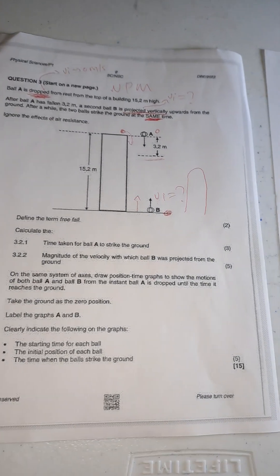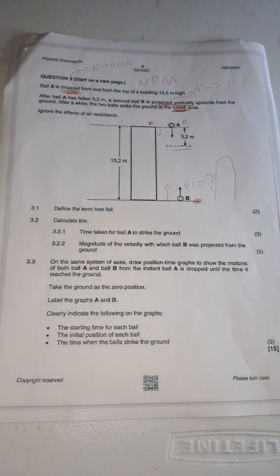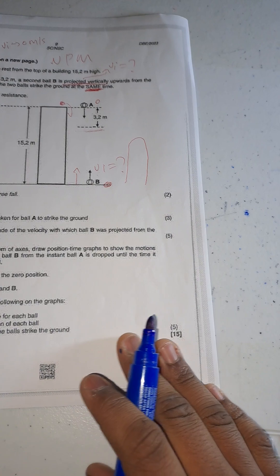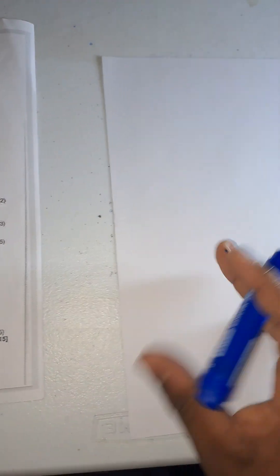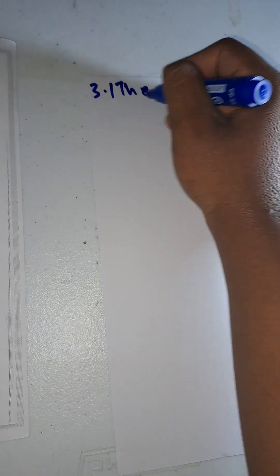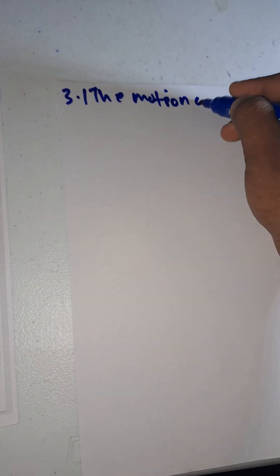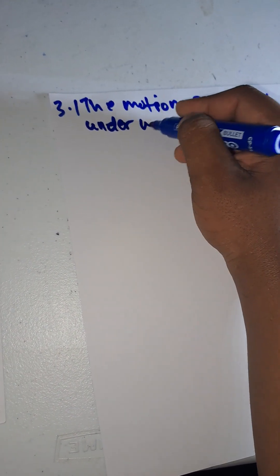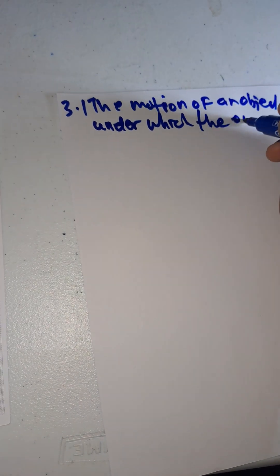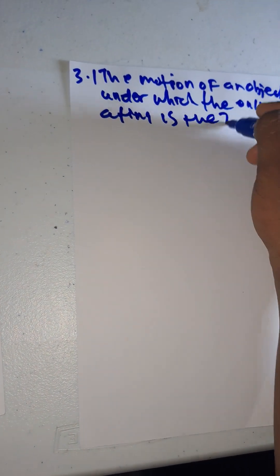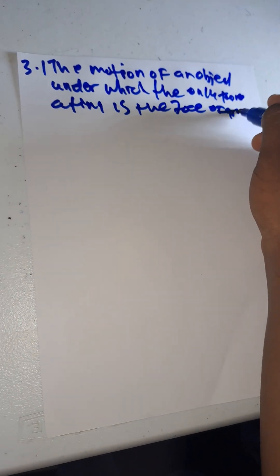The first question asks us to define the term 'free fall'. Free fall is the motion of an object under which the only force acting is the force of gravity. This is important because people often confuse it with projectile motion.